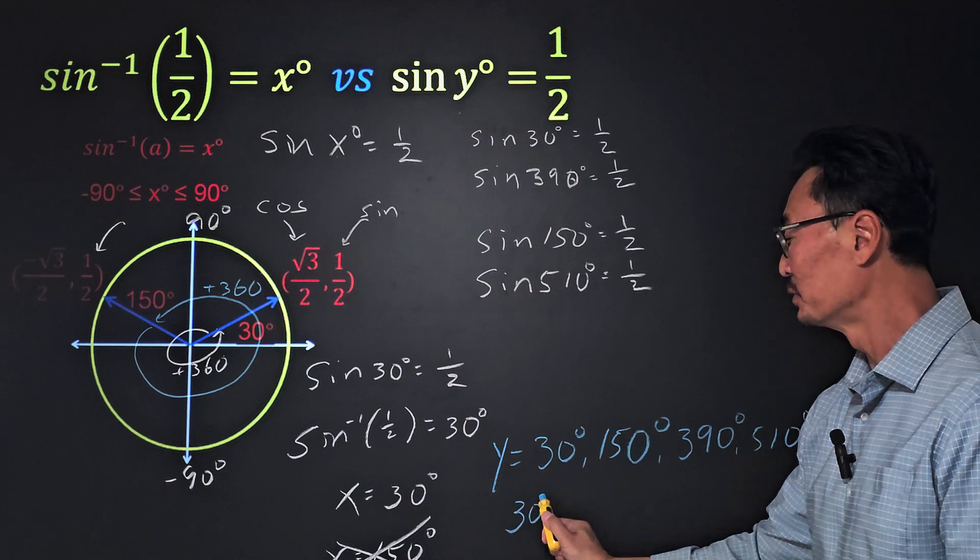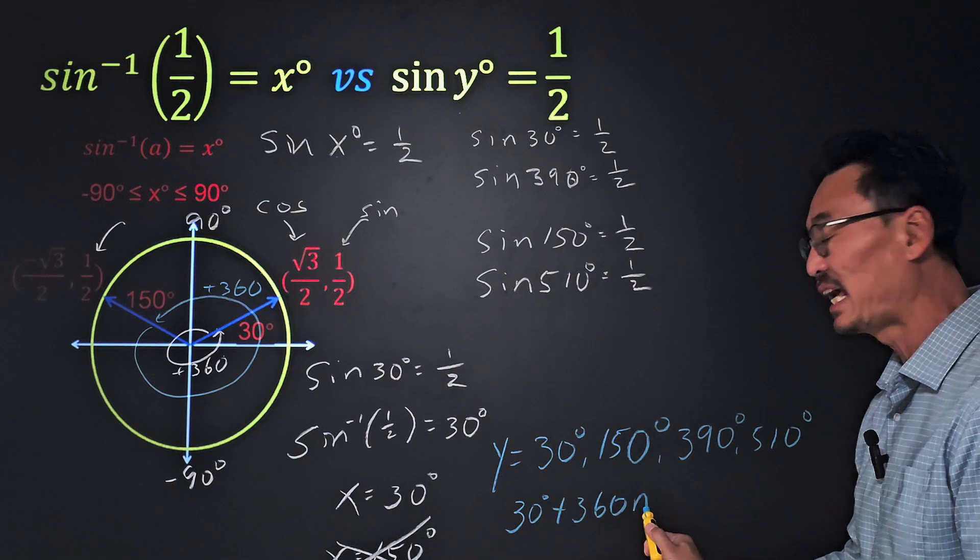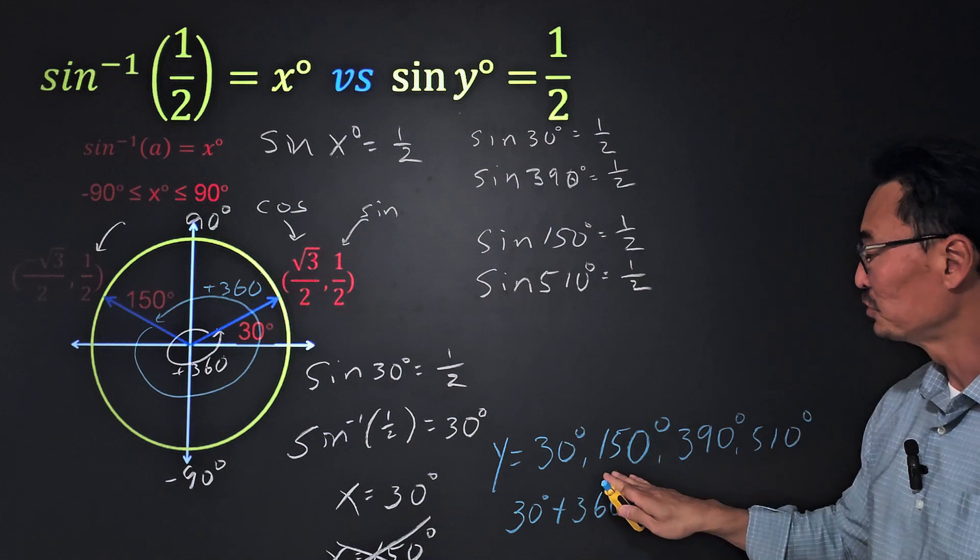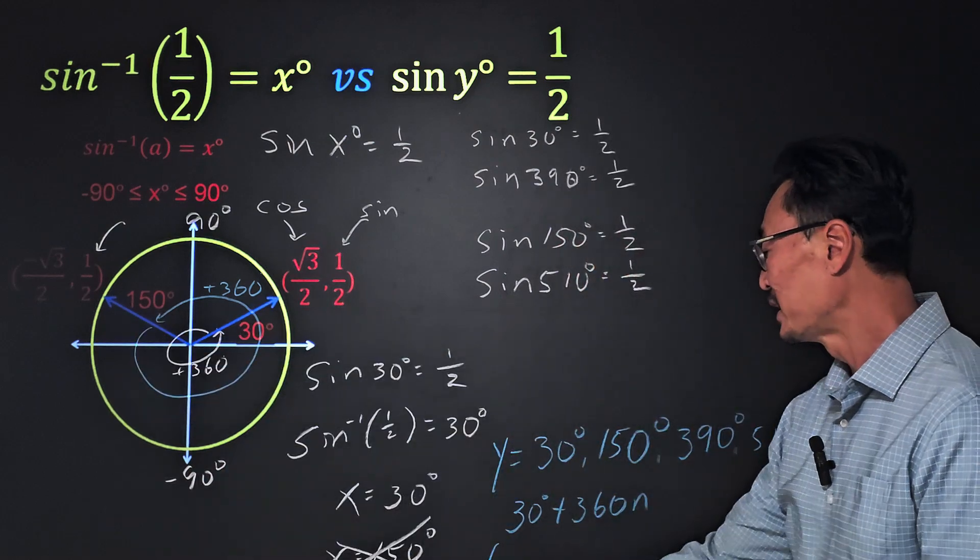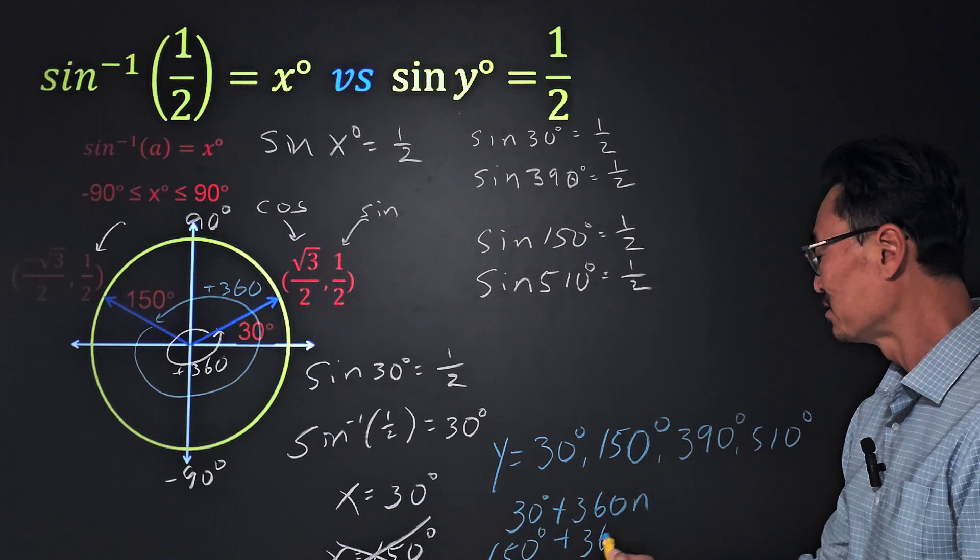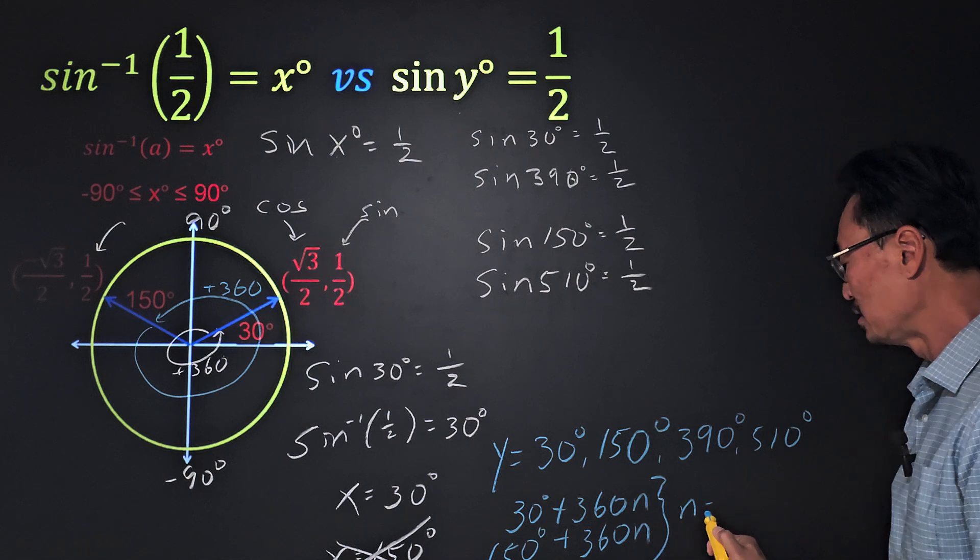How do we write this as our complete solution? The way to do it is we take the first one that we have, 30 degrees, and you add 360 degrees times n, where n is an integer value. We do the same with the 150 degrees, the other angle here in quadrant two. Take the 150 degrees and add 360n, where n is an integer.